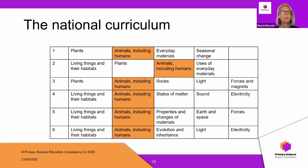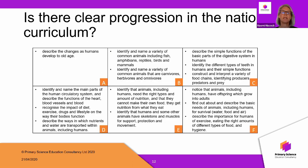I'd like you to have a think about six statements — the six statements from the 'Animals Including Humans' topics — which I've put in a random order. If possible, commit your answer to a piece of paper so you remember what you thought. I'd like you to decide which objective belongs to year one, which to year two, three, four, five, and six.